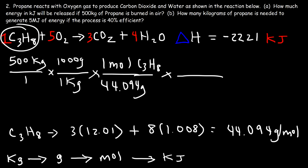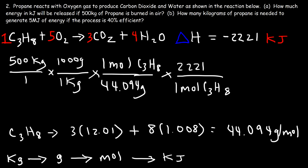Notice the ratio between C3H8 and the 2221 kilojoules — the coefficient is 1, so 1 mole of propane yields 2221 kilojoules of heat energy. We multiply 500 by 1000, divide by 44.094, then multiply by 2221, giving 2.52 times 10 to the seventh power kilojoules, which is negative. The exact answer is about 25,184,832 kilojoules.